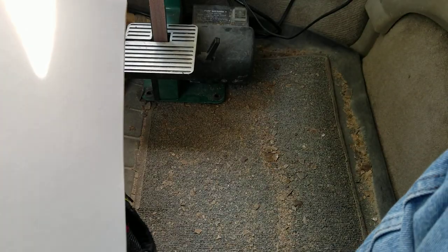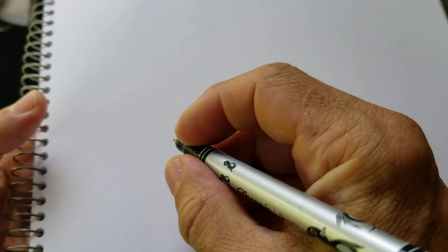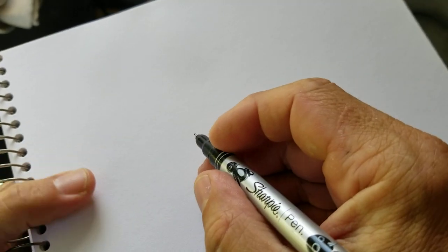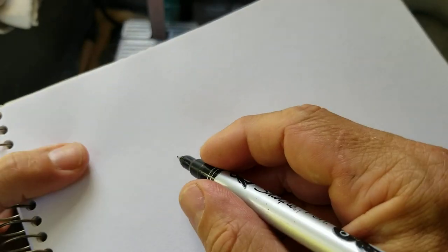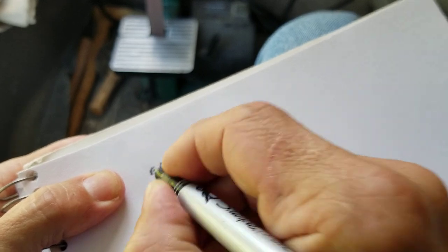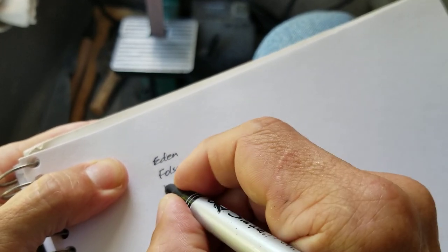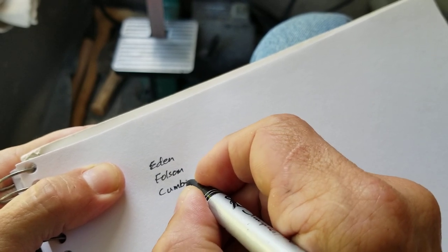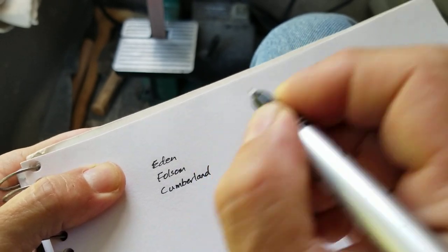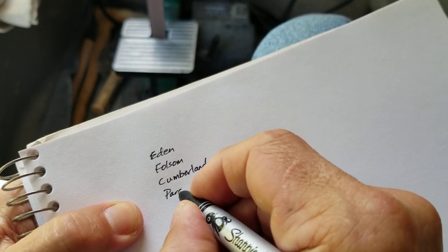Okay, time for a lecture. Time for getting all preachy. Now don't do the preachies. I want to hear about Eden, Cumberland, and Folsom. Yeah, do the Eden, do the Folsom, do the Cumberland. Do the parallel flaking.